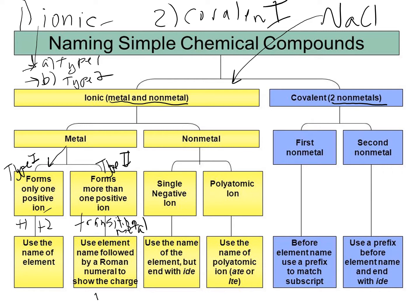For example, iron (Fe) is a transition metal. Sometimes it may have a plus 2, sometimes a plus 3. The only way we know what the charge is will be based on the anion — that tells us what kind of charge it has. To name a type 2, Fe is iron, and you'll write parentheses with a Roman numeral to show the charge. So if it was Fe²⁺, you'd put Roman numeral 2. If it's type 1, you just use the element's name.